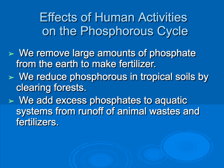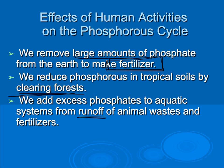Human activities affect the phosphorus cycle in a few ways. We remove large amounts of phosphate from the earth to make fertilizers. We also reduce phosphorus in tropical soils by clearing forests. Additionally, we add extra phosphates to water systems through runoff from animal waste — cow farms and other animal farms — as well as from agricultural fertilizers.